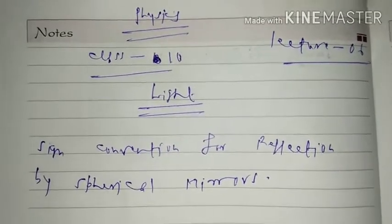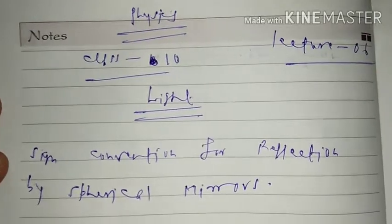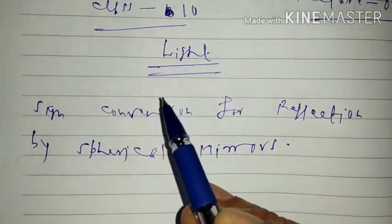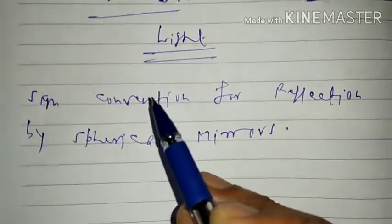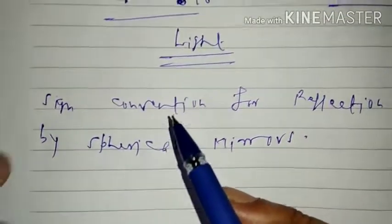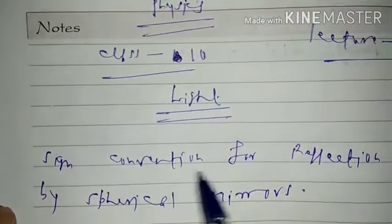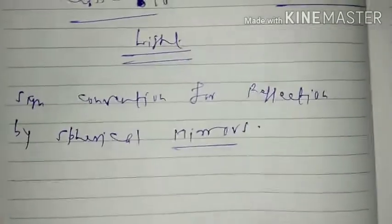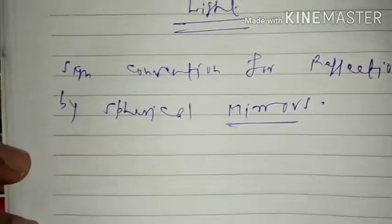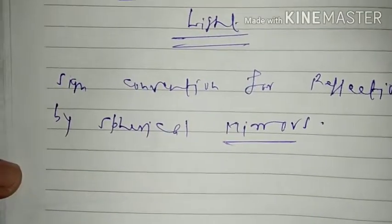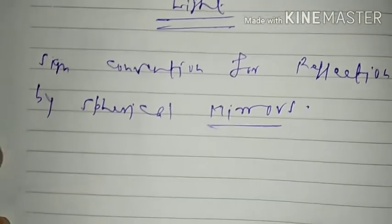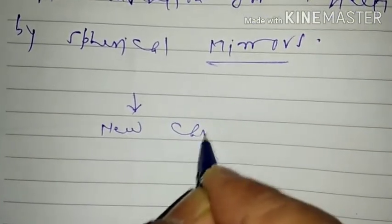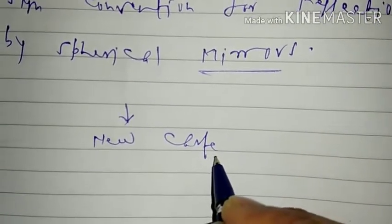Hello students. In my last lecture I had discussed image formation by convex mirror and had also solved questions given in our NCERT text of science. In this lecture we shall see sign convention for reflection by a spherical mirror. While dealing with the reflection of light by spherical mirrors, we shall follow a set of sign conventions called the New Cartesian sign convention.